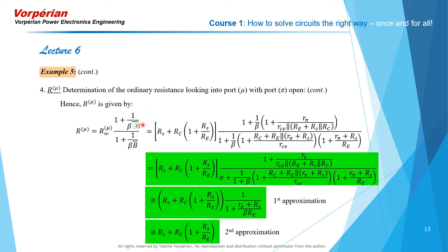Substituting these three calculations into the extra element theorem gives the full expression for R_mu. Using R_pi / (1 + beta) = r_e and beta / (1 + beta) = alpha ≈ 1, we get a compact expression for R_mu, which we further approximate twice — a cruder approximation assuming beta → ∞ will be validated in the next video's numerical example.